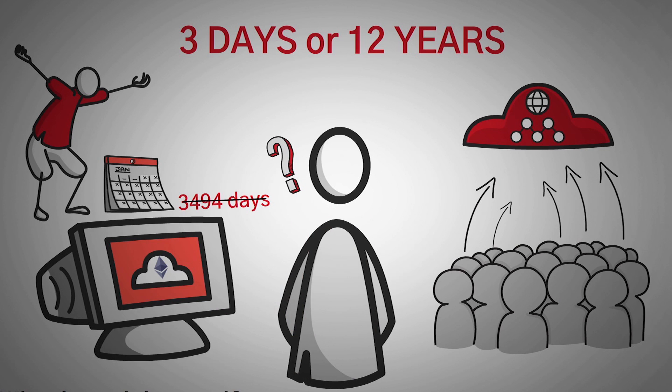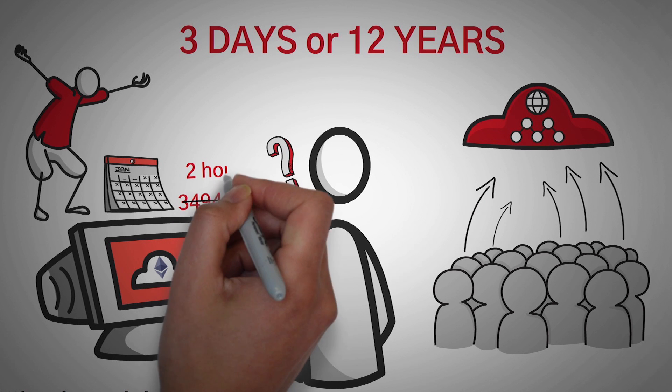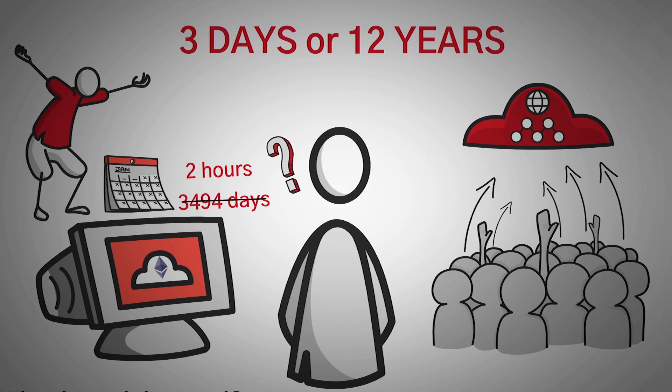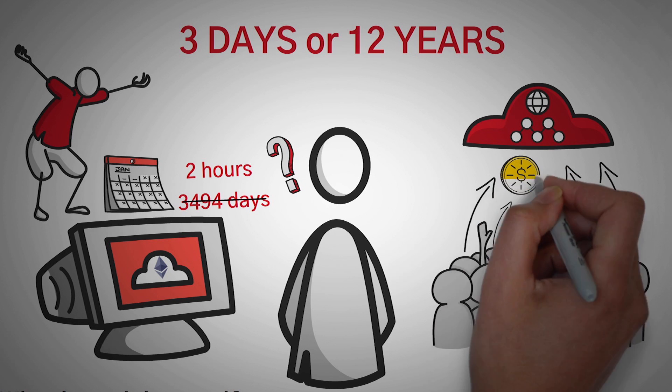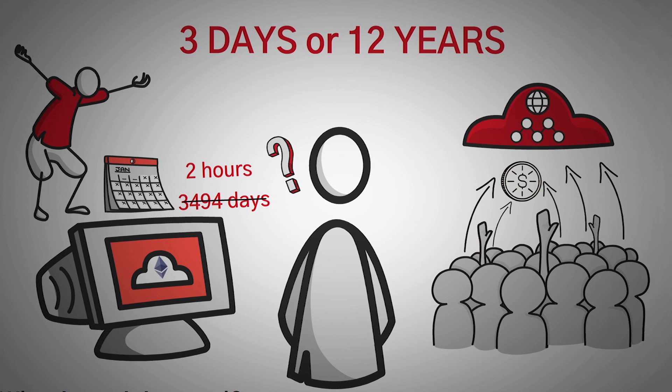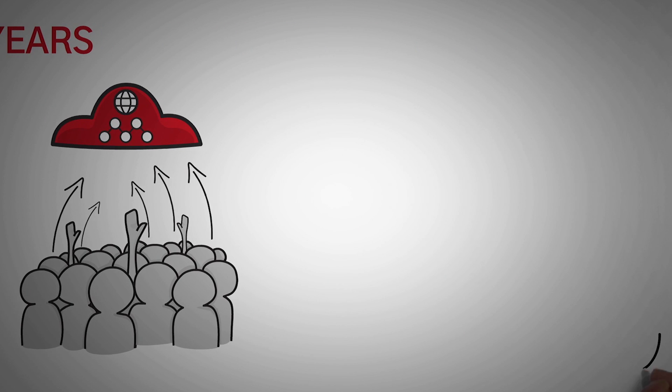This takes the average time down from 3,494 days to two hours. And then whenever the group finds the solution and earns the reward, they split it up between everyone who has mined it, even if they particularly weren't the ones who found the successful solution. So those who work harder get a larger percentage. That way it's fair to them.